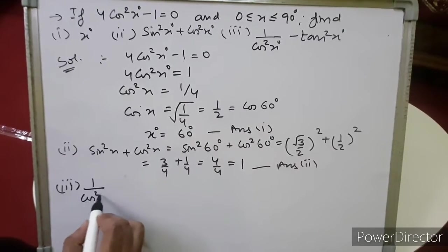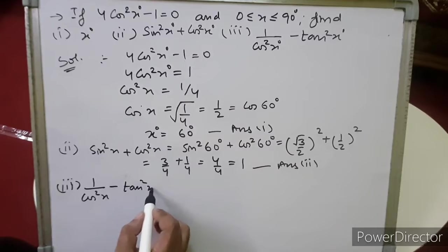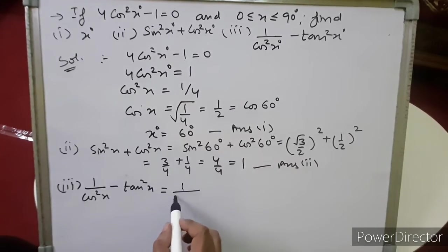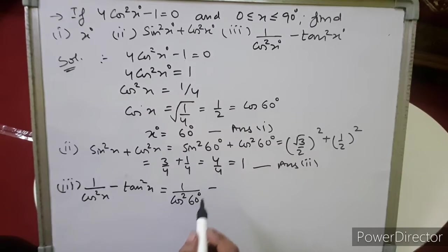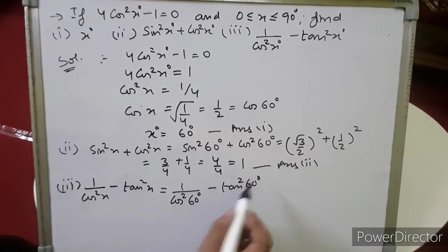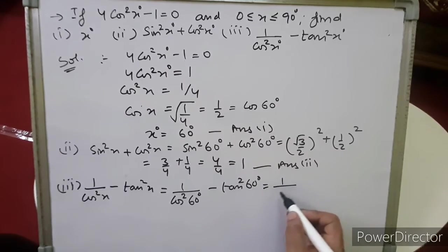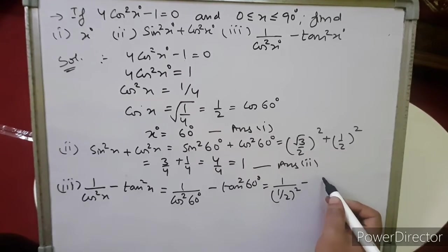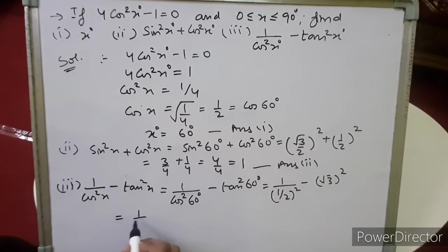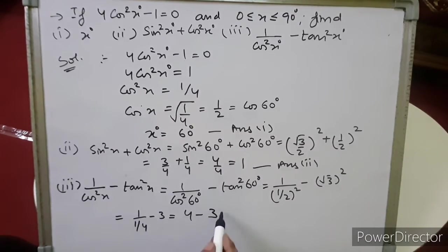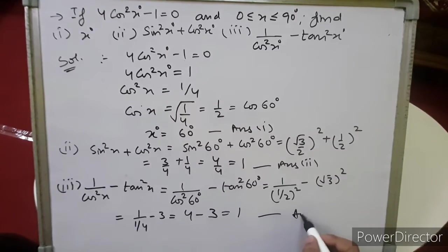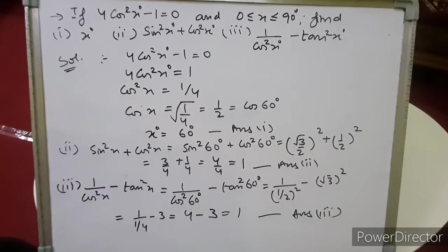For the third part, find 1/cos²x − tan²x. Substituting x = 60°: 1/cos²60° − tan²60°. Cos 60° = 1/2, so 1/(1/2)² = 1/(1/4) = 4. Tan 60° = √3, so tan²60° = 3. Therefore 4 − 3 = 1. All three values have been calculated: x = 60°, sin²x + cos²x = 1, and 1/cos²x − tan²x = 1.